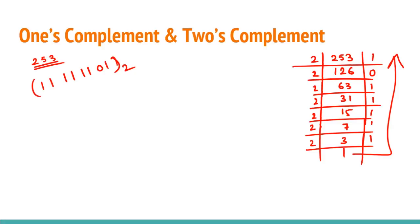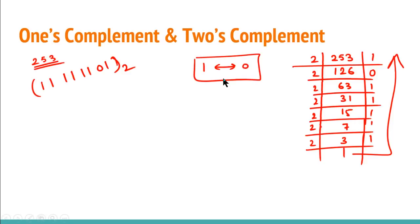Now, to calculate the ones complement of this number, you simply reverse ones with zeros and zeros with ones — that is the simple rule for ones complement. So the ones complement of 253 would be 00000010.